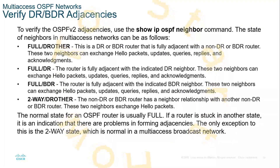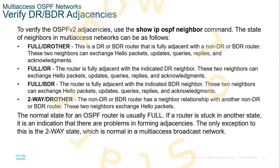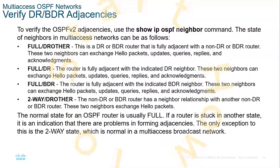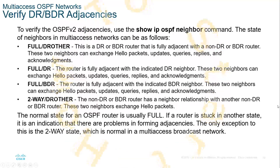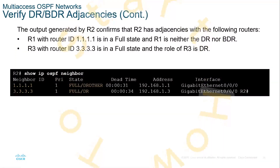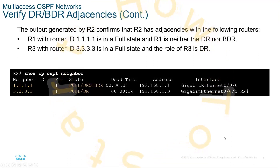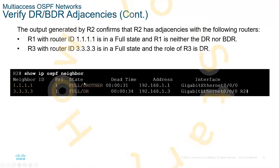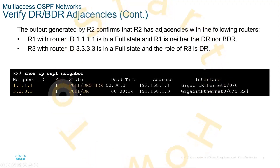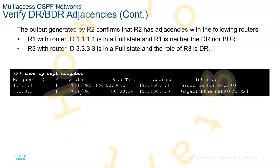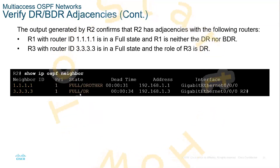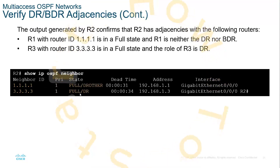The normal state for an OSPF router is usually full. If a router is stuck in another state, it could indicate a problem forming adjacencies. The only exception is the two-way state, which is normal in a multi-access broadcast network. So with multiple routers, the state will be either full or a two-way drother. The DR and BDR are the only two that should be getting multiple packet types — everything else should only be getting hello packets.